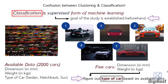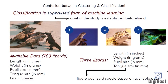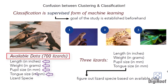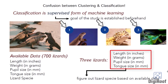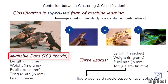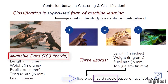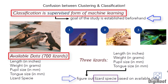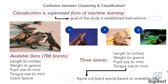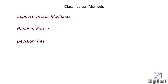Let's think of some more examples of classification. Let us say that you have data of 700 lizards available with you, including their length, weight, pupil size, tongue size, and the specific species that these lizards belong to. Now suppose you get data for 3 lizards minus the name of the species they belong to. Based on the existing data, you need to figure out the name of the species for these 3 lizards. This problem also comes under supervised learning as we beforehand know the goal of the study. Some popular classification techniques include support vector machines, random forest, and decision trees.